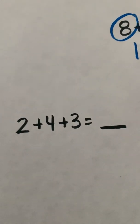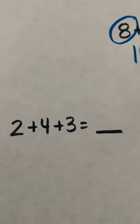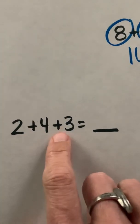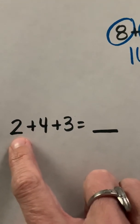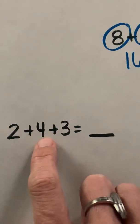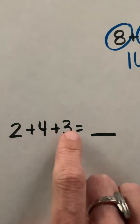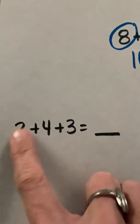We've got 2 plus 4 plus 3. Now I don't see any numbers that add to give me 10. I know 2 plus 8 gives me 10 - I don't see an 8. 4 plus 6 - I don't see a 6. And 3 plus 7. So that's not gonna work.